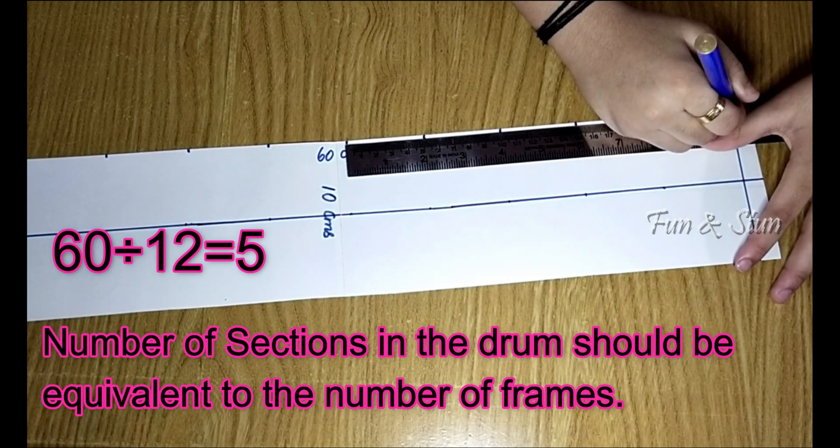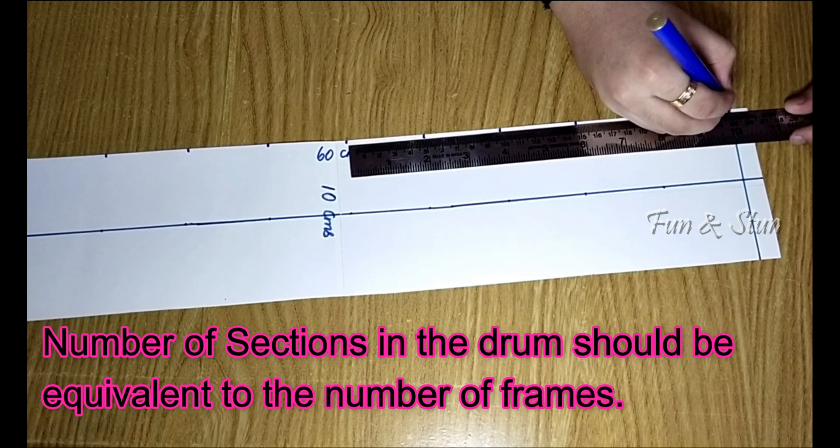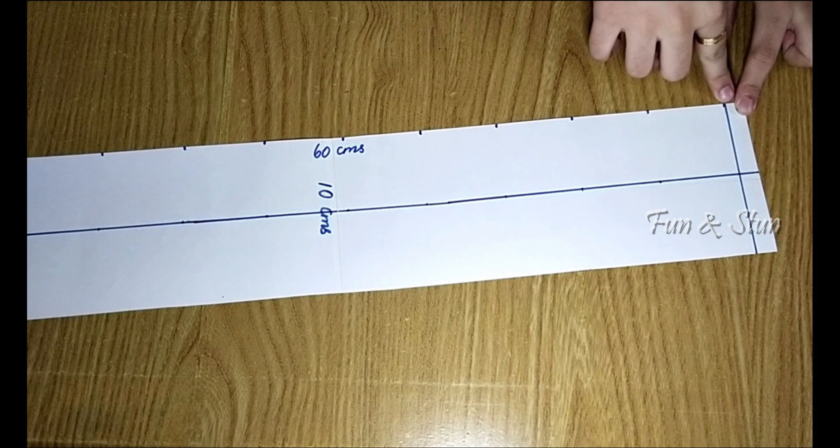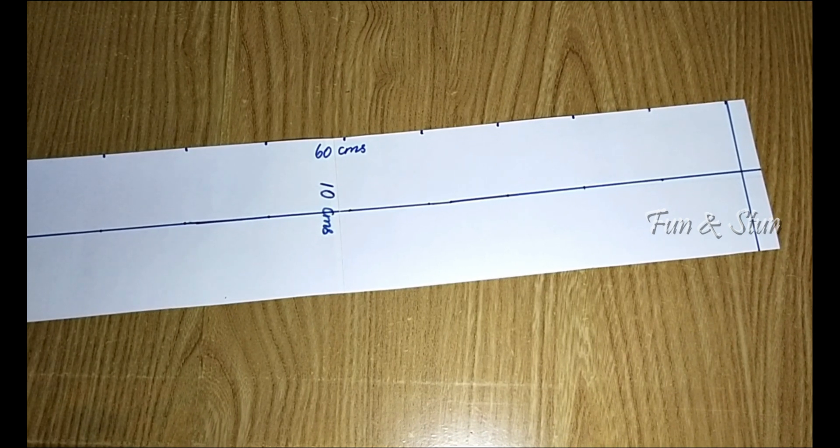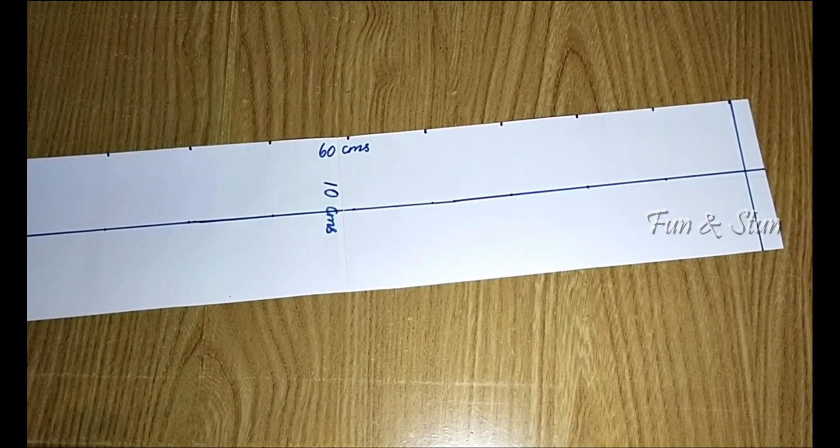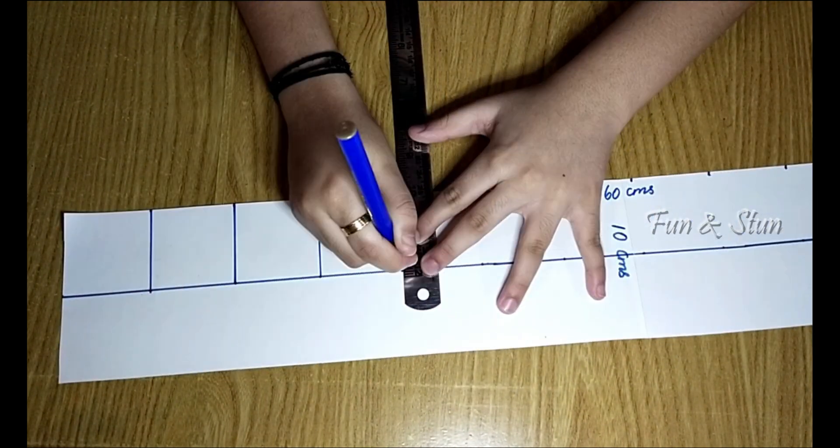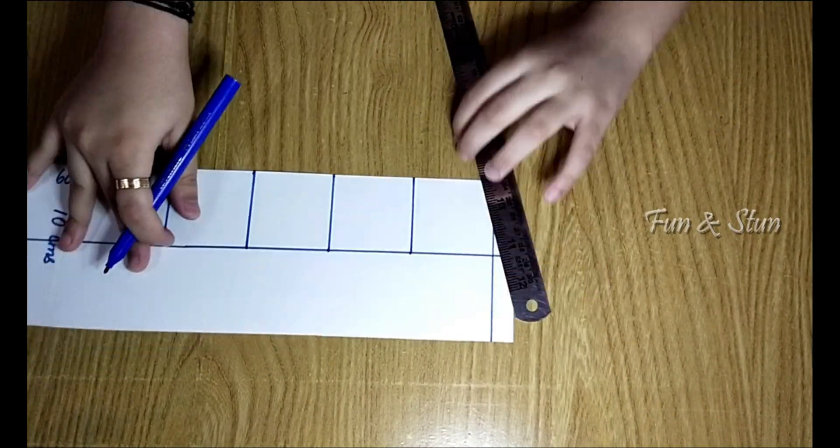The number of sections in the drum should be equivalent to the number of frames. That is, if you are making 8 frames, then the number of sections in the drum should also be 8. Let's leave some space to stick it together. Now connect the marked points to the middle line.